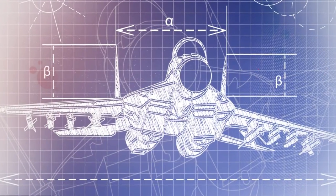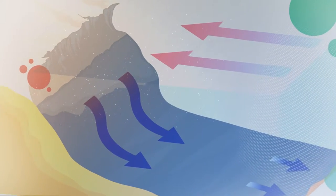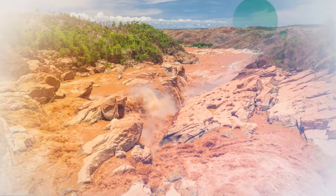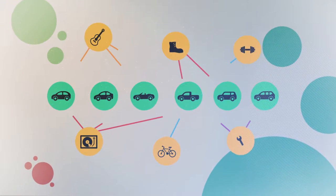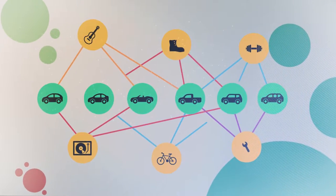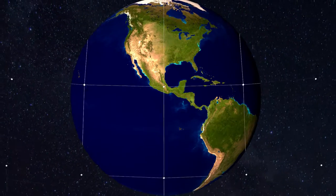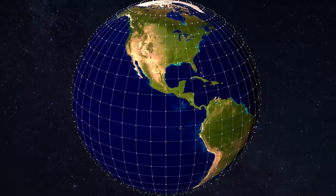Scientists use models to represent a number of things such as objects, concepts, or systems in order to gain a better understanding of them. But the term model can mean many different things, from a physical model of a watershed to examine the movement of sediment in a river, to a statistical model of the relationship between consumers' interest and the type of vehicle they buy. In the case of a global climate model, we're referring to a numerical model that runs on a powerful supercomputer.